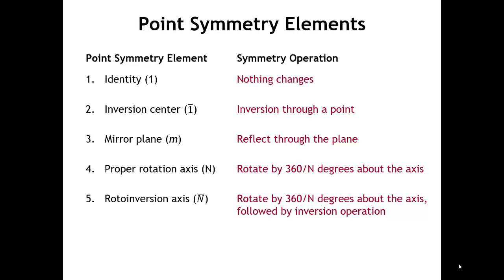We could have an inversion center — that is, we invert through a point. So if we have an atom that has coordinates x, y, z, and the inversion center is at the origin, afterwards the new coordinates would be minus x, minus y, minus z.